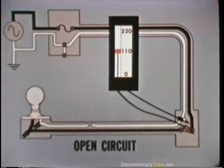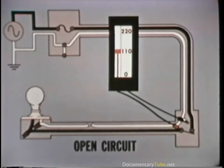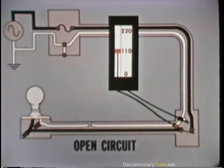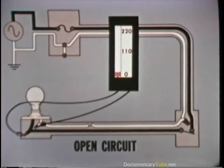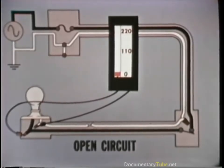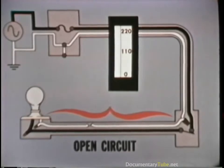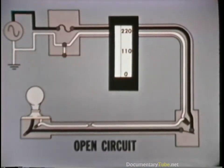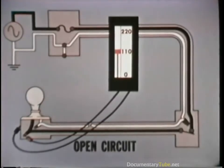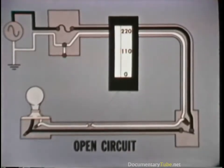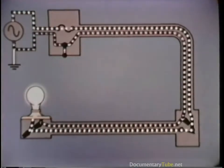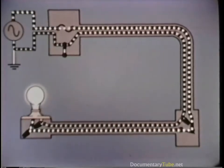Moving to the switch box, voltage is still present. Checking at the far side of the switch reveals voltage, so the switch is good. The final checkpoint is at the fixture box — at this point, there is no voltage. The trouble has been traced to this section of conduit. However, continuing a step farther can determine which conductor is defective. A check between the hot conductor and ground indicates 110 volts, which proves that the hot conductor is continuous. So the open circuit must be in the neutral conductor. Replacing the defective section of neutral conductor restores the service.